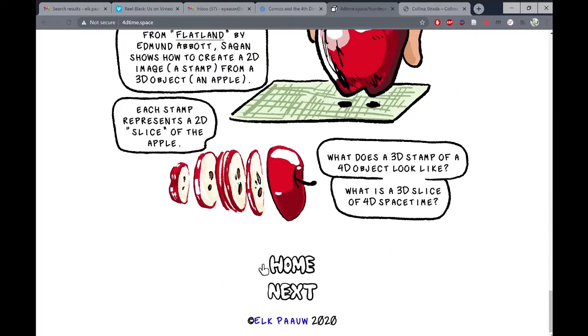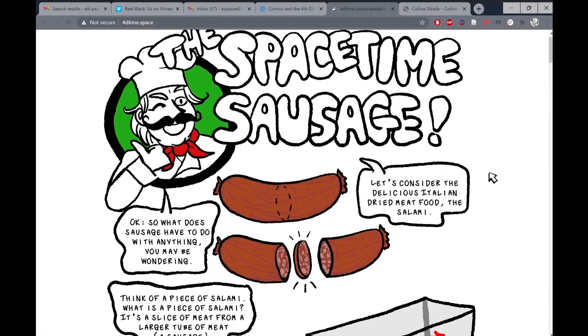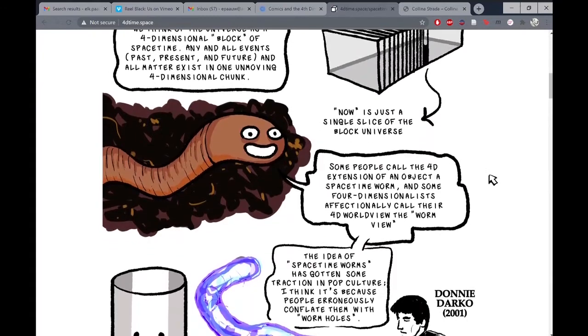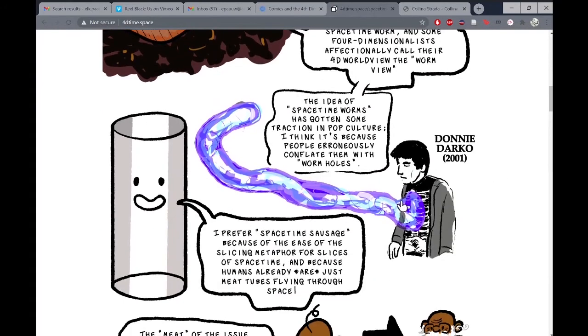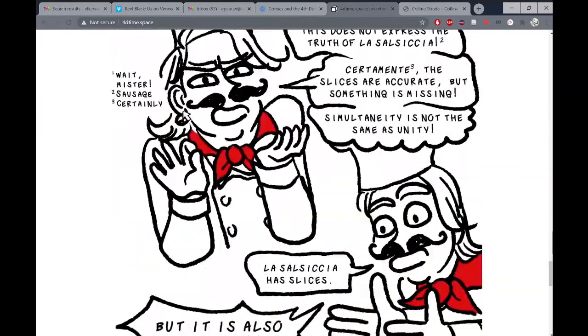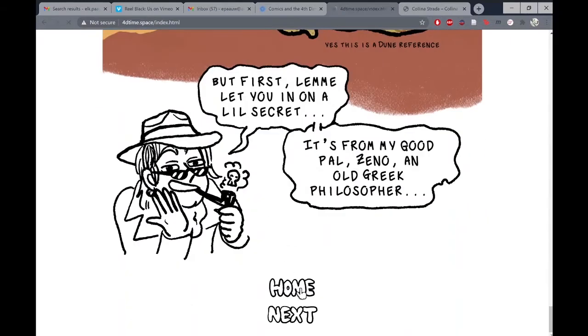Pretty cool. And then you can either click next or home. So I'll show you what next looks like. It just loads the next page. This is Spacetime Sausage. This page is actually pretty long. There's the worm. There's Donnie Darko. And you can click that and then it takes you to a little video. But anyways, let's just go all the way down. This one's really long. So, yeah, that's the homepage.